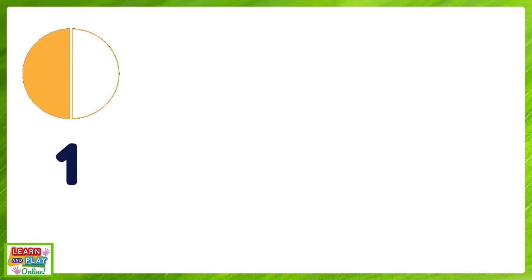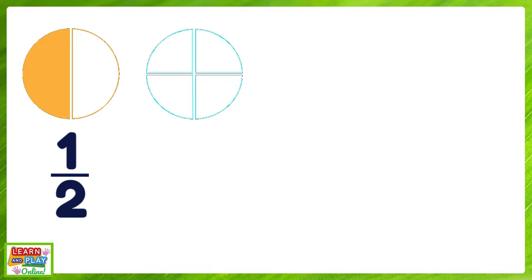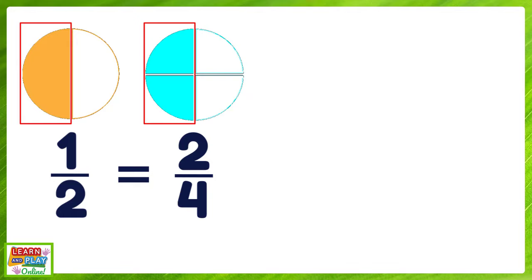Here we have one whole circle. If we take the same circle and cut it into two equal parts, it would look like this. You can see that in this circle, one part out of two has been shaded. Let's use the same circle again, but instead of having two equal parts, let's cut it into four equal parts — we now have quarters. If we shade two parts out of the four, what do you notice? The same amount has been shaded. From these visual representations, we can see that one half is the same amount as two quarters, which means they are equivalent fractions.